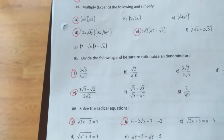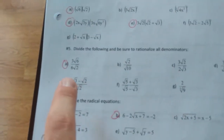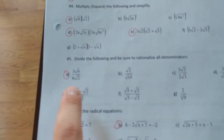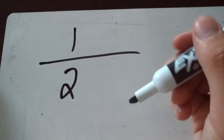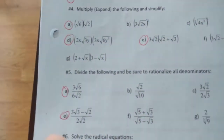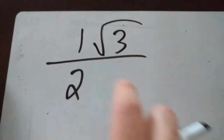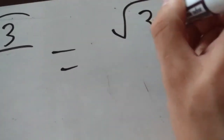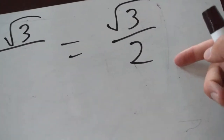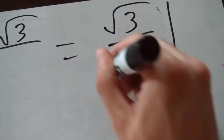Question 5: divide and rationalize the denominators. For part A: 3 root 6 divided by 6 root 2. Divide coefficients: 3 over 6 simplifies to 1 over 2. Divide radicands: root 6 over root 2 is root 3. Combined: root 3 over 2. The denominator is already rational, so this is our final answer.